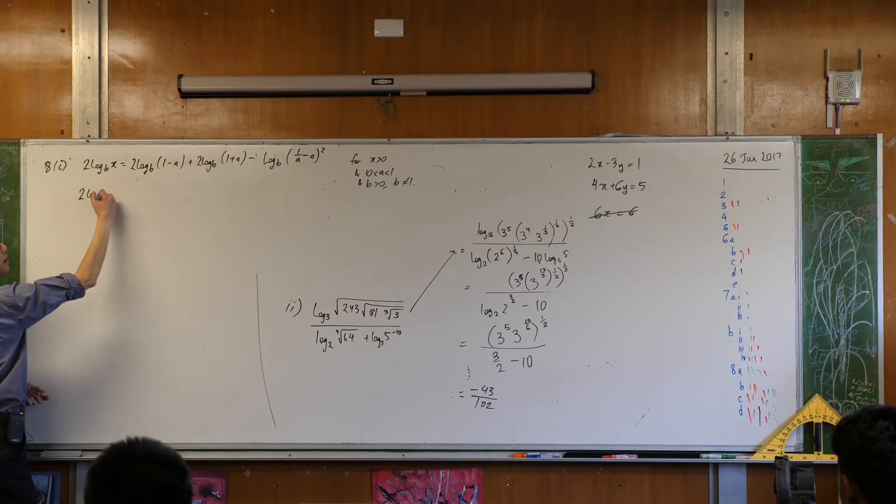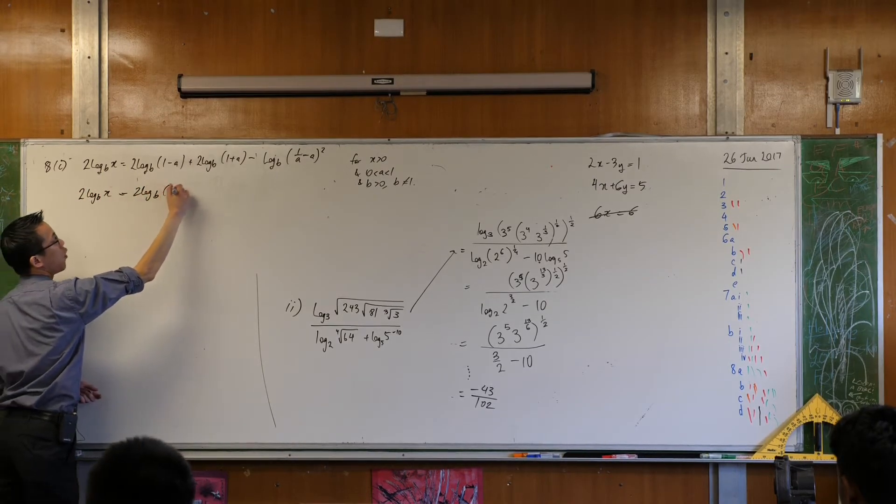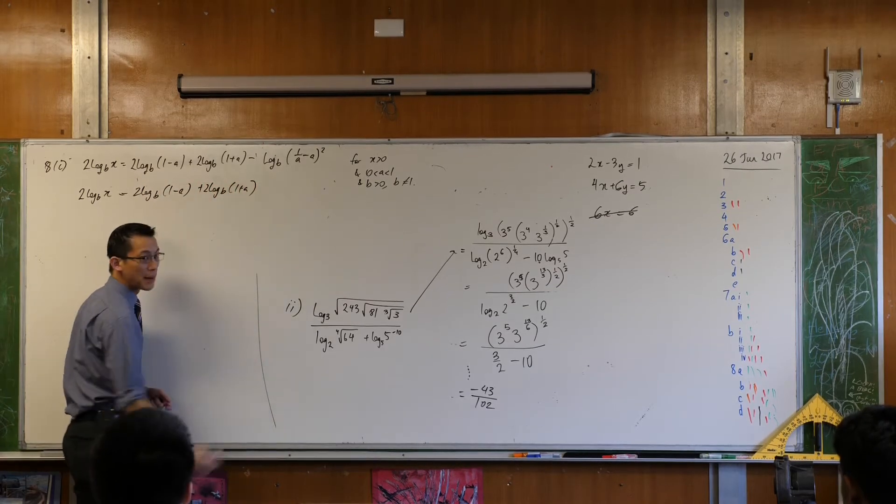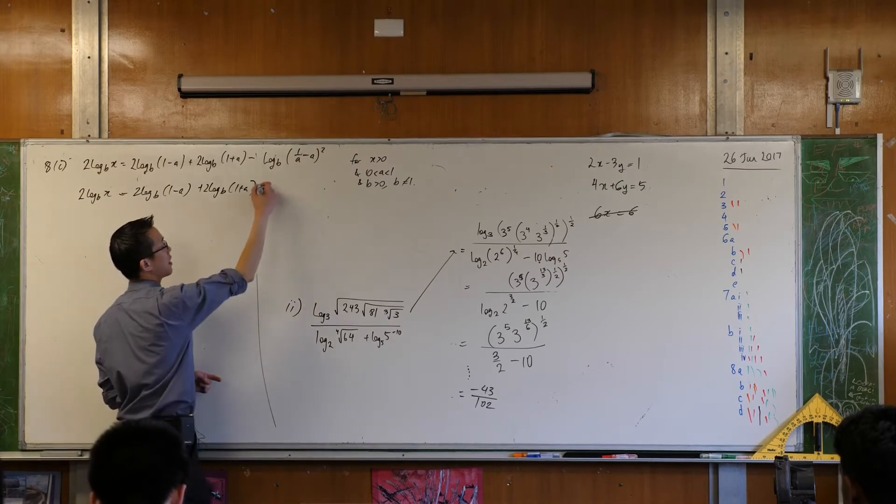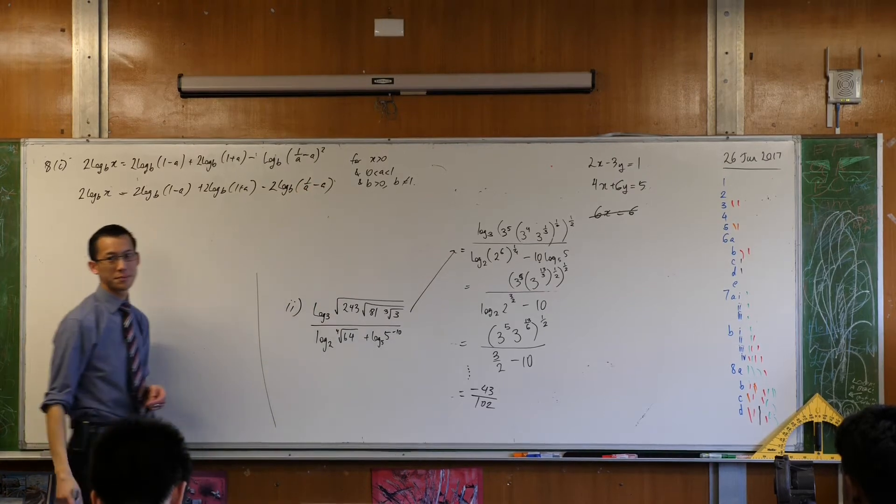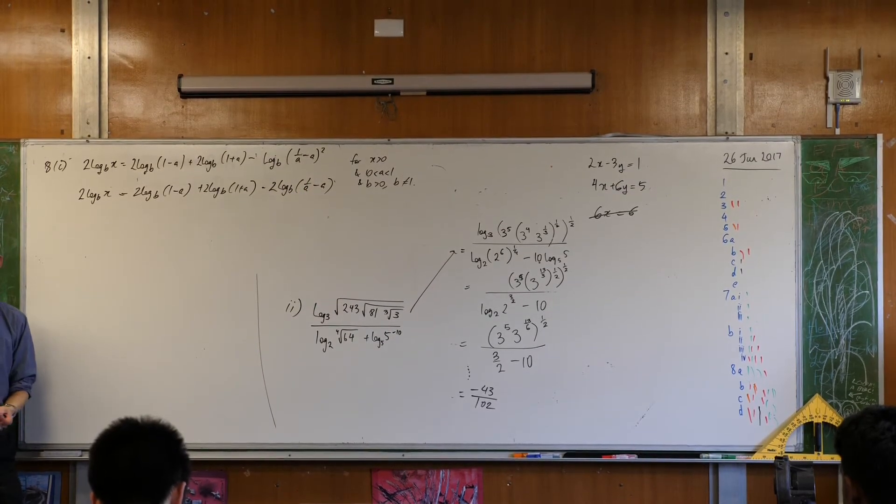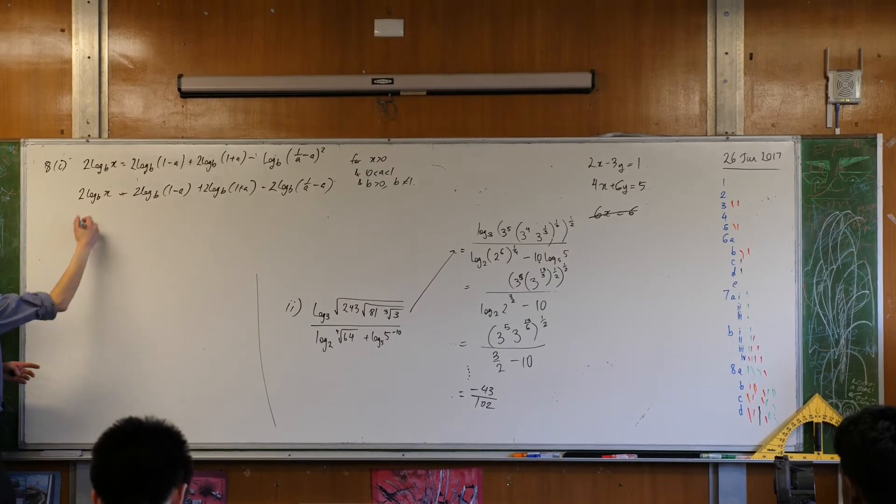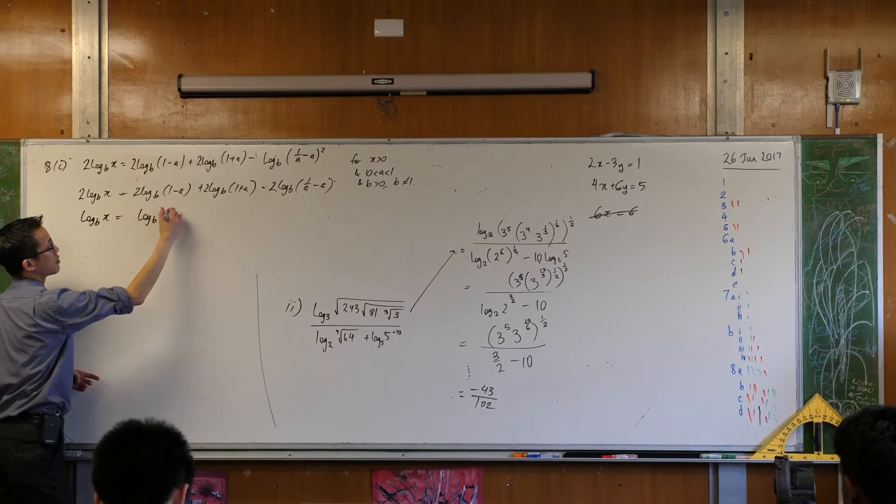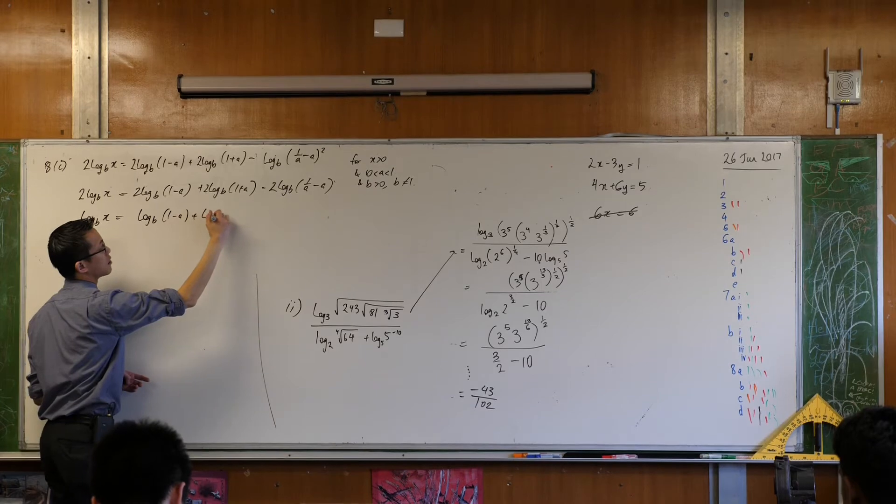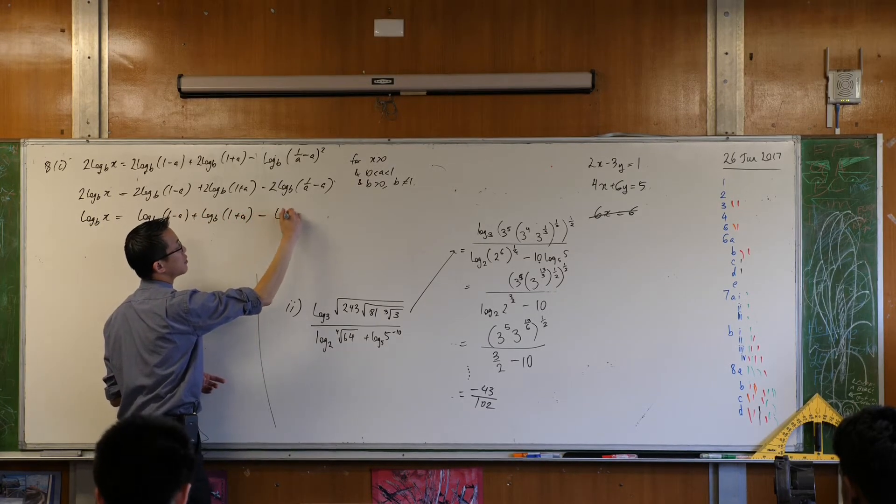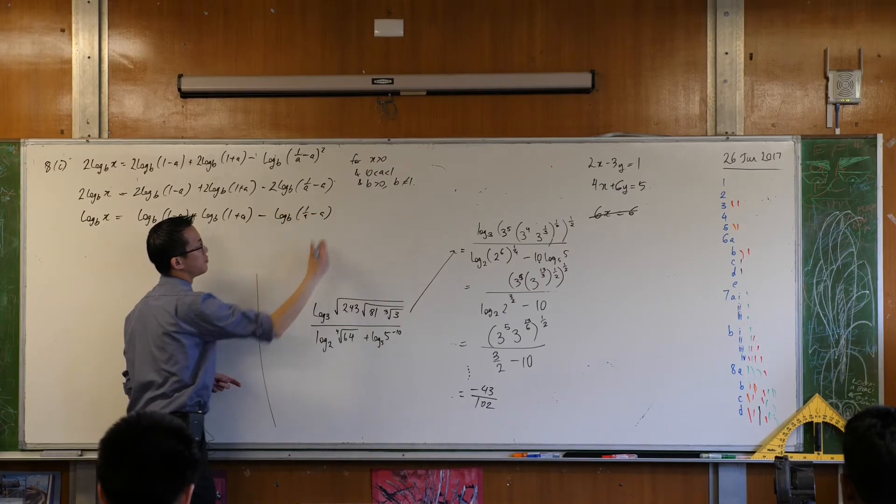I'm going to have 2 log base b of this. All of this stuff is going to remain unchanged. But at this point, once I've reached the last term, I can manipulate that and bring that 2 out the front. Seeing a common factor of 2 all the way, I'm just going to divide everything by 2.